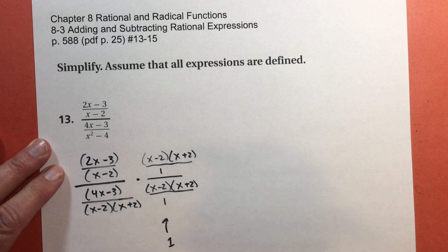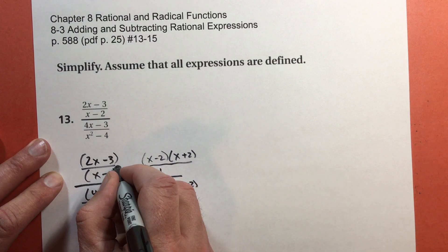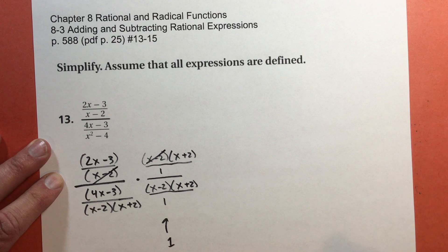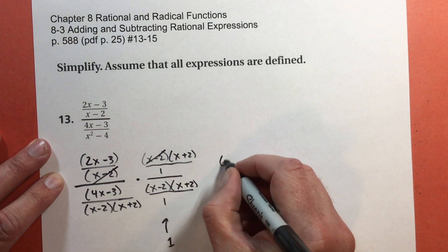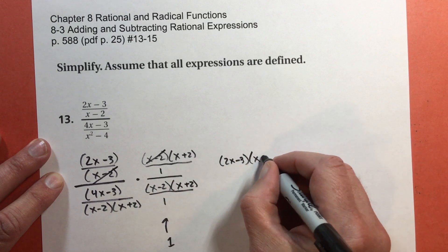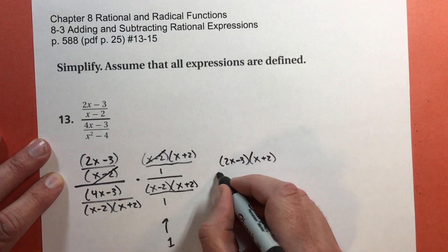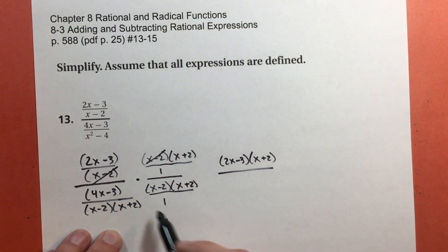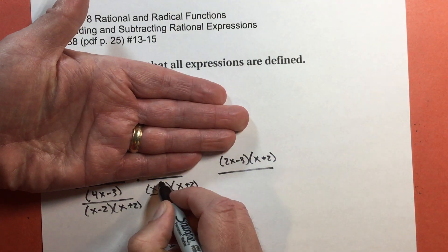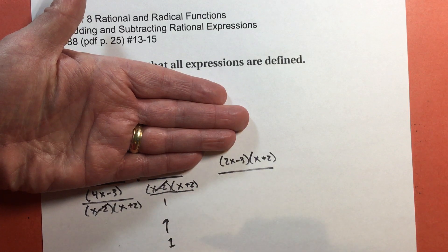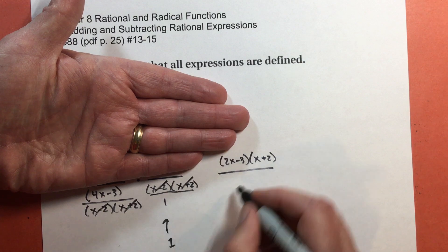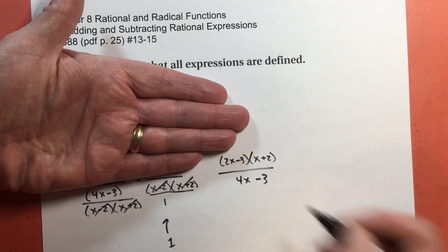The x subtract 2s are going to be eliminated. They're going to reduce. That leaves 2x subtract 3 times x plus 2. In the bottom part, these x subtract 2s are going to reduce, and these x plus 2s are going to reduce. That just leaves 4x subtract 3.